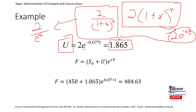We put that into our formula: F0 = (S0 + U) times e raised to power RT. S0 is 450 and we just calculated U = 1.865. For the value of e, we can either use 2.71 or use the exponent button on our calculator, adjacent to the decimal point button. Raising to power R times T, we get F0 = 484. So the forward value of this consumption asset is $484, and the same arbitrage strategies can be applied.